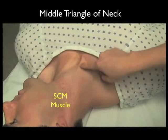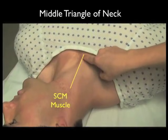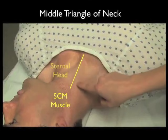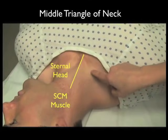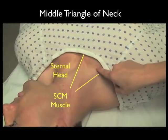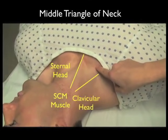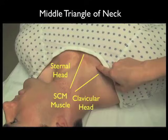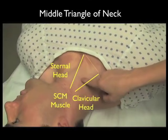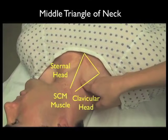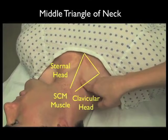Here's the middle triangle of the neck that serves as the standard approach for cannulation of the internal jugular vein. We see here the branches of the sternomastoid muscle — the sternal head medially and the clavicular head laterally.